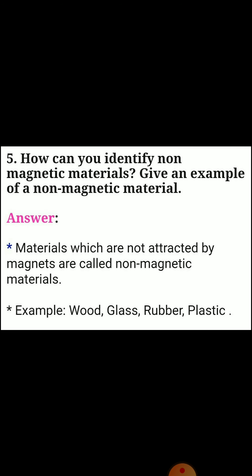Next, fifth one: how can you identify non-magnetic materials? Give an example. Answer: materials which are not attracted by magnets are called non-magnetic materials. Examples: wood, glass, rubber, plastic.